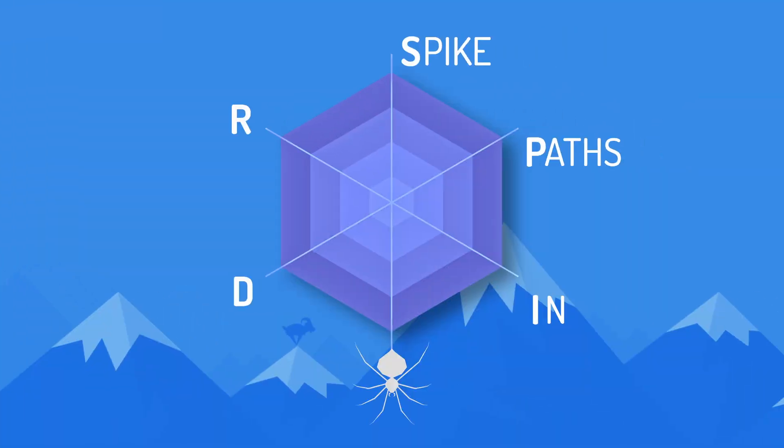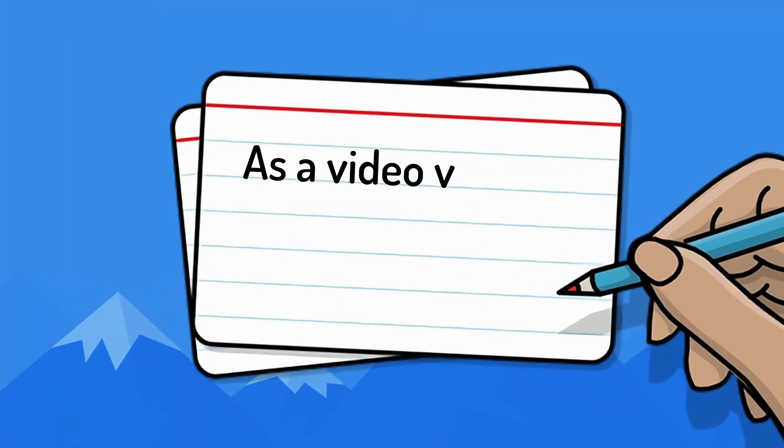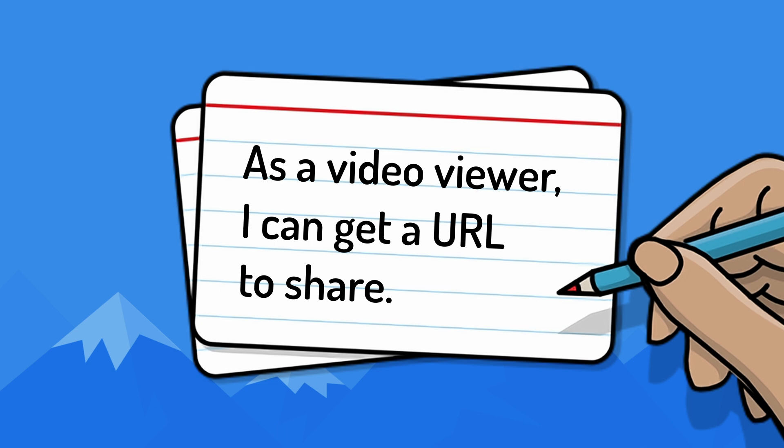The I in SPIDER is for interface, which refers to splitting the story by its interface. The most trivial example would be a mobile app — you can split the story into iOS and Android versions. In other cases, splitting by interface can be done by having a simple version of the interface and then a more involved version as separate stories. Applying this to our YouTube video sharing example, we could split out a basic sharing story like 'as a video viewer, I can get a URL to share.' This could be implemented with no user interface other than a share button — the pop-up with 16 different sharing options wouldn't be needed if the only way to share is through a URL.